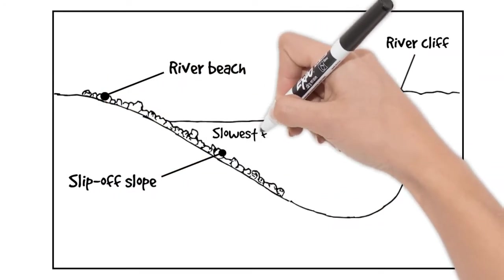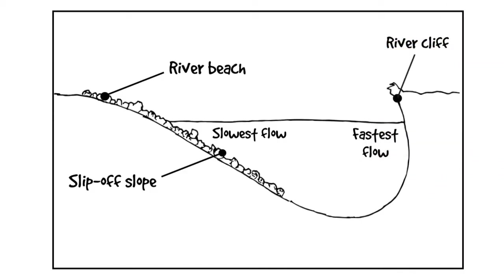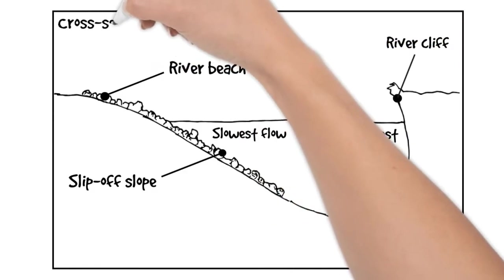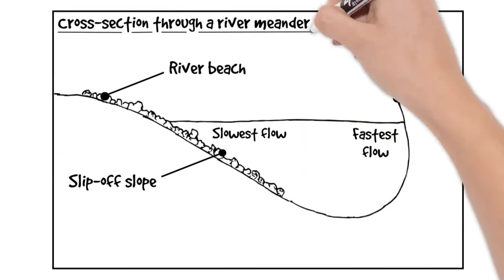This is where sediment has been deposited because of the slow flow of the water. Remember the outside of the meander is where the fastest flow is. Remember to give all your diagrams a nice clear label and underline it.